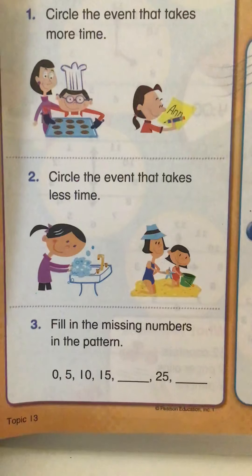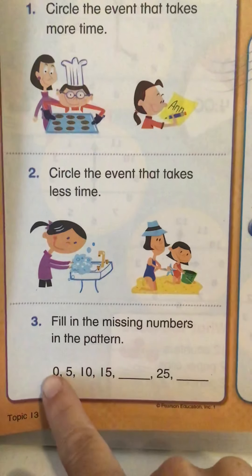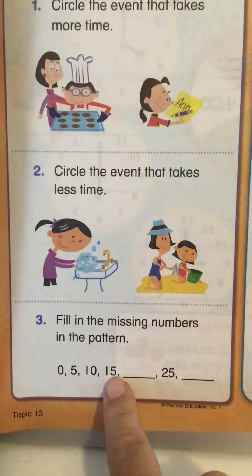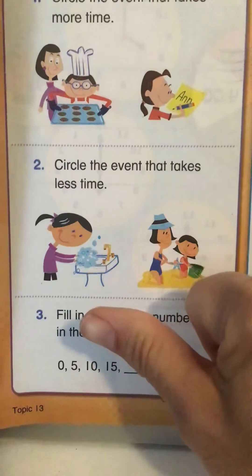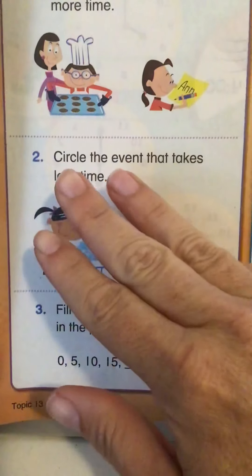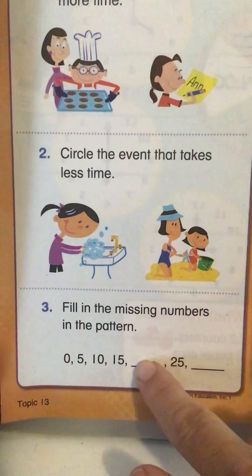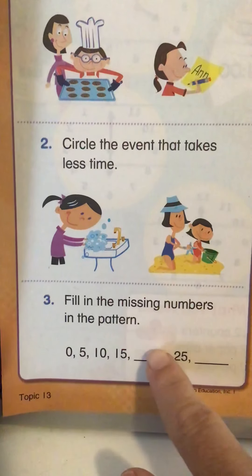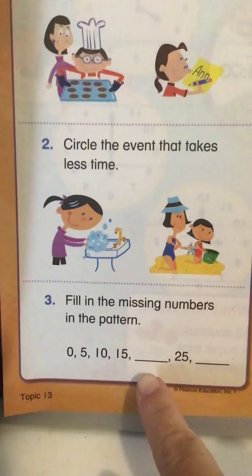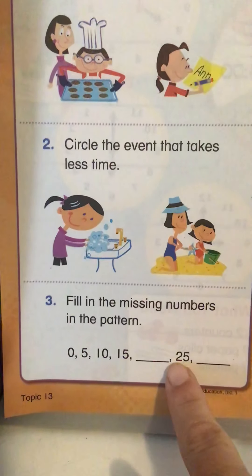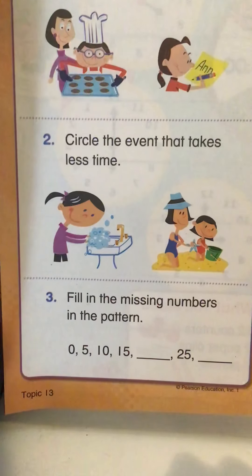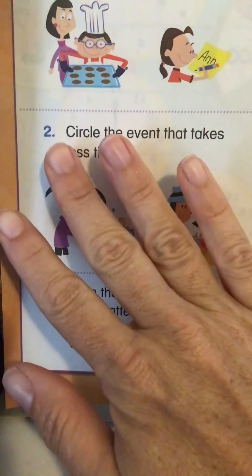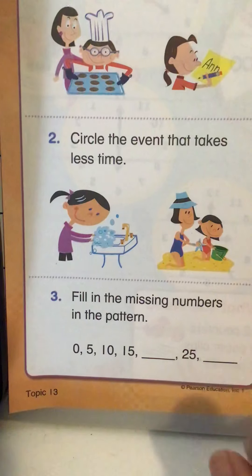Down at the bottom, fill in the missing numbers in the pattern. They are skip counting by fives. So 0, 5, 10, 15. I want to start at 15 and go up five more numbers, so I'm going to count on: 15, 16, 17, 18, 19, 20. That's five more, so I'm going to write a 20 on the line. Two comes first, then the 0 for 20. After that, five more gets us to 25. And if we skip up five more from 25: 26, 27, 28, 29, 30. So on this line we're going to write 30.